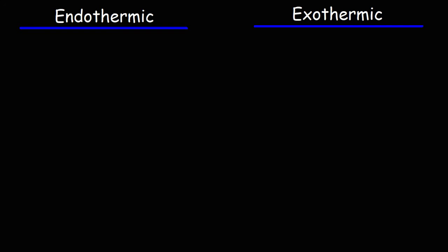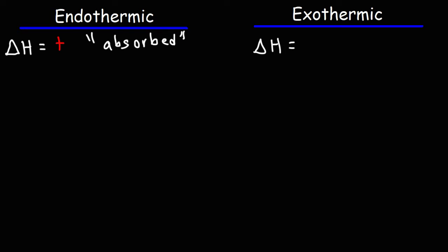In this video, we're going to talk about endothermic and exothermic reactions. In an endothermic reaction, the enthalpy change is positive — heat energy is absorbed by the system. That's the key word to take into account when dealing with endothermic reactions. For an exothermic reaction, heat energy is released by the system, and so the enthalpy change is negative for an exothermic process.